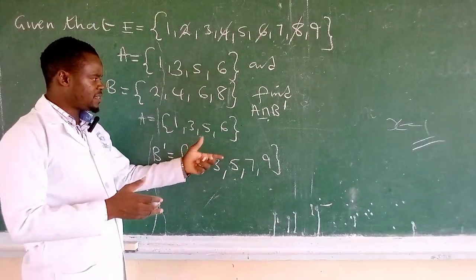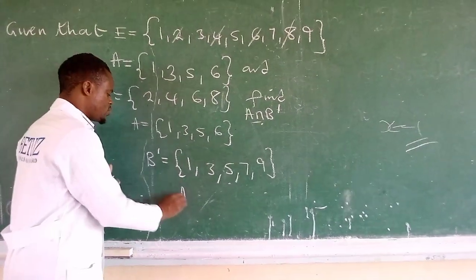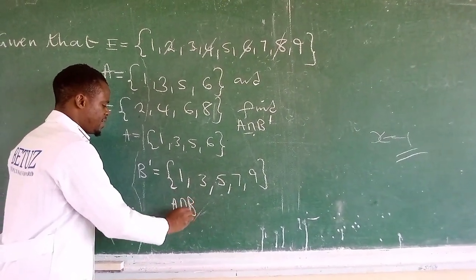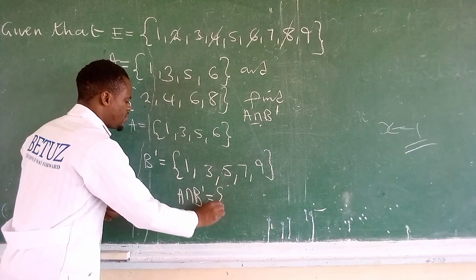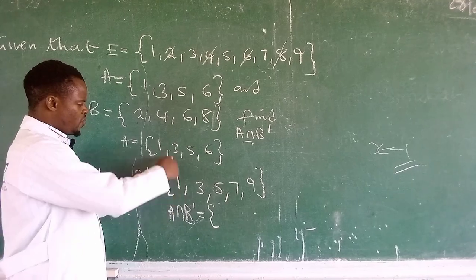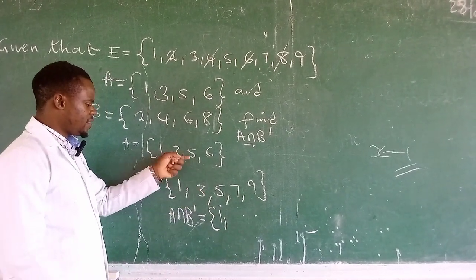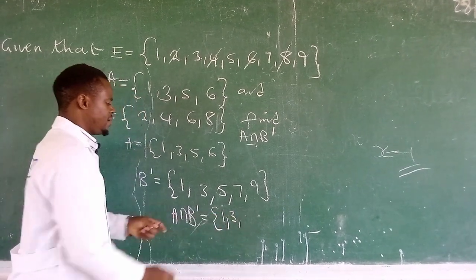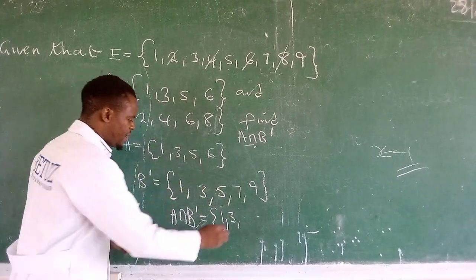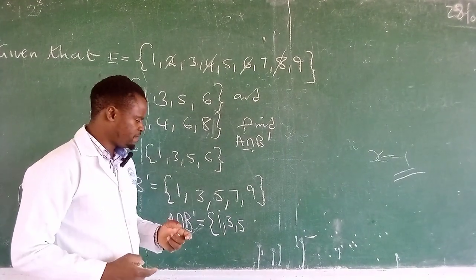So now after having come up with that set and we already have set A, what we're going to do is find the intersection set of these two sets. What are those elements that are featured in both sets? We have 1 and 1 there, we have a 3 there and also a 3 there, a 5 is there and 5 is there.